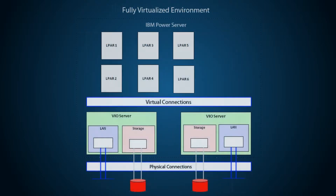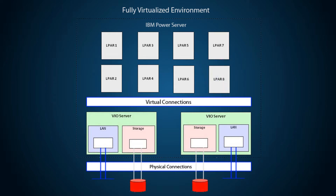Now consider a system with the same number of LPARs utilizing redundant VIO servers. The application LPARs use virtual connections through the VIO servers, and the only physical connections are from the VIO servers to the network and storage. When you add an additional LPAR, you create new virtual connections to the VIO server, but do not need any additional physical connections and therefore do not need any additional hardware or infrastructure. The time to create the LPAR is also significantly reduced since no downtime is needed for hardware installation.